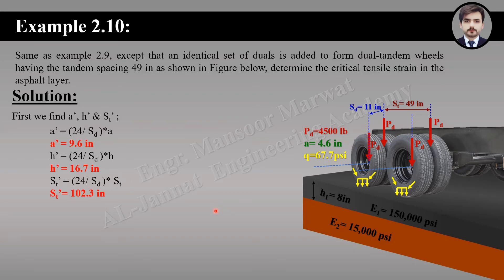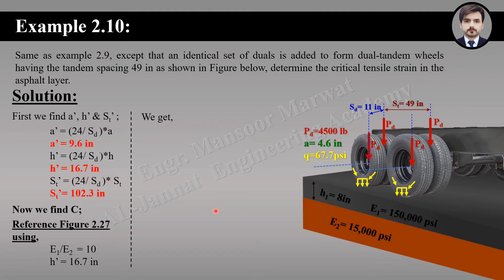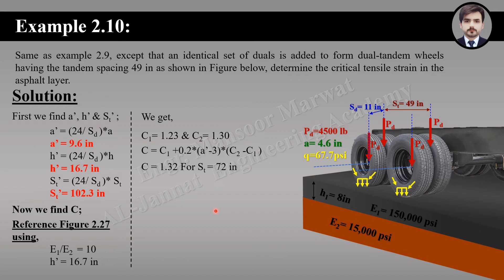First we find conversion factor C for S_T equals 72 inches using reference figure 2.27. With two input parameters we get C1 equals 1.23 and C2 equals 1.30. Putting these values into the equation gives C equals 1.32 for S_T equals 72 inches.